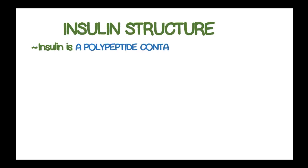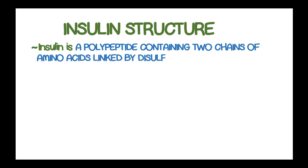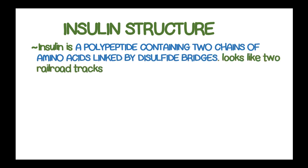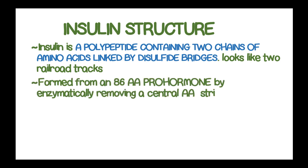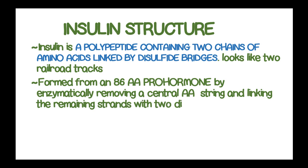Insulin is a polypeptide containing two chains of amino acids that are linked by disulfide bridges. It is formed from an 86 amino acid prohormone by enzymatically removing the central amino acid string and linking the remaining strands with two disulfide bonds.